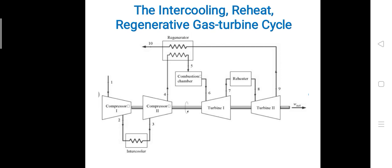Heat is added to the output of the air compressor through the regenerator. The heated compressed air then enters the combustion chamber. Fuel is passed parallelly into the combustion chamber and combustion takes place, drastically increasing the temperature of the burnt gases.